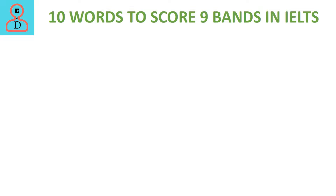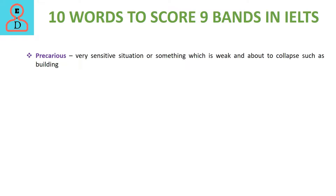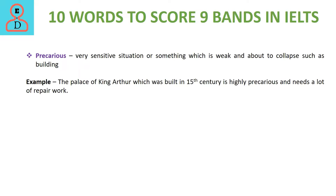The next word is precarious. This word is used for a very sensitive situation, such as when riots happen somewhere, or for something which has a very weak structure and could fall at any time. In the example, the palace is said to be so old and has suffered so much damage that it could collapse, hence it needs a lot of repair work.